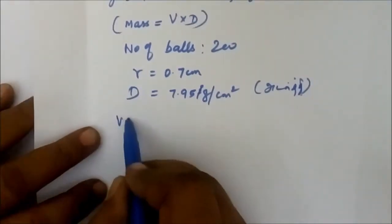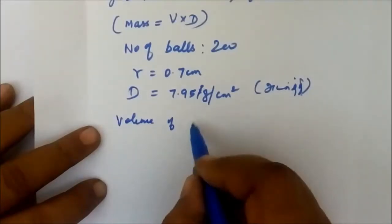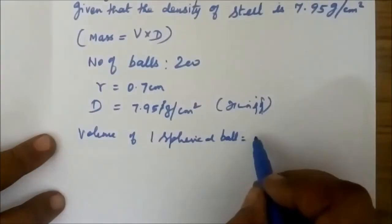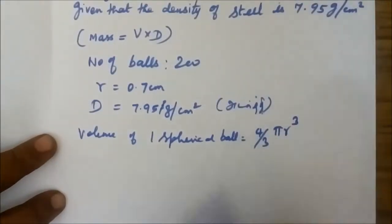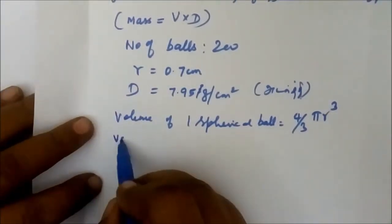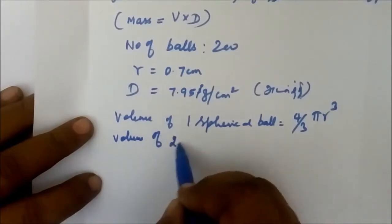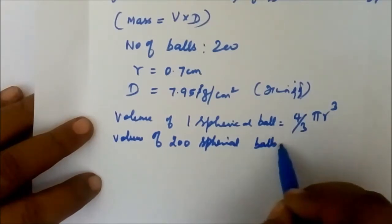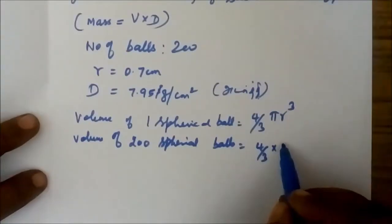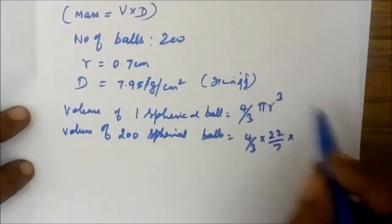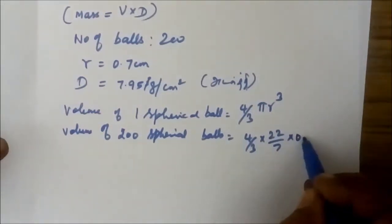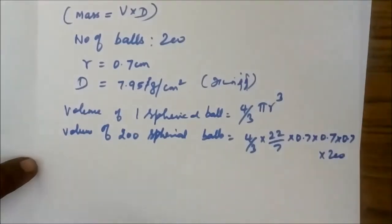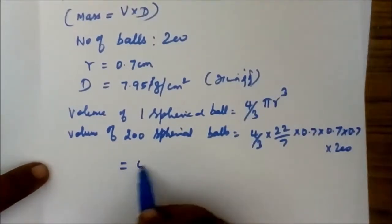The volume of one spherical ball is equal to 4/3 πr³. Therefore, volume of 200 spherical balls equals 4/3 π times 22/7 times r, which is 0.7, so 0.7 × 0.7 × 0.7 × 200.